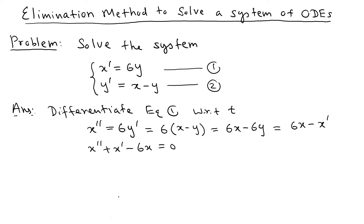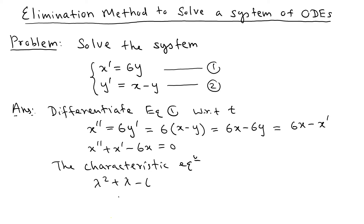We know how to solve these kinds of equations — this is a constant coefficient second order differential equation. We look at the characteristic equation: lambda squared plus lambda minus 6 equals zero. This is easy to factor as (lambda plus 3)(lambda minus 2) equals zero, giving us lambda equals negative 3 and lambda equals 2.